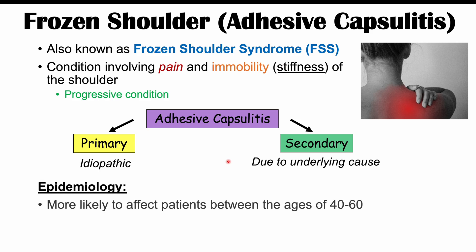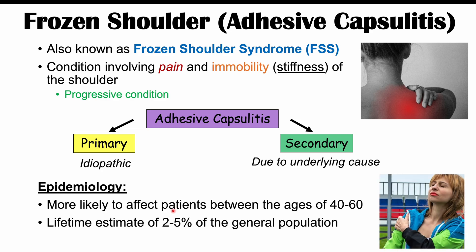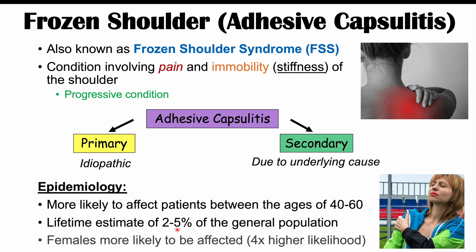Frozen shoulder syndrome is more likely to affect patients between the ages of 40 to 60, and the lifetime estimate of having this condition is 2 to 5% of the general population. Females are more likely to be affected than males — roughly four times higher likelihood in females compared to males.